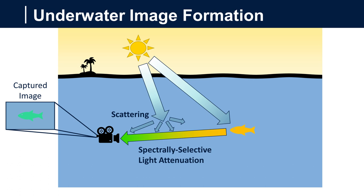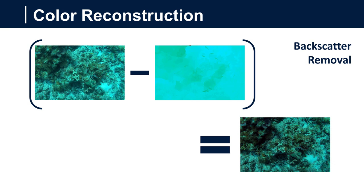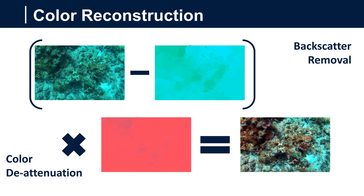To reconstruct the true color of underwater images, we follow a standard two-step approach. The first step is backscatter removal, which produces an image free from the haze caused by backscattering. The second step is color deattenuation, whereby scaling the color channels of an image appropriately recovers the true colors of the scene.